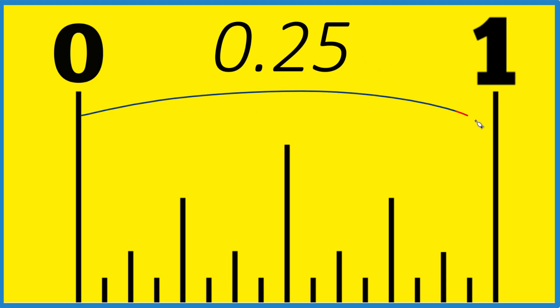On our ruler, we have one inch right here, and then if we cut that in half, we get one half of an inch. That's the tallest line, and that's 0.5.